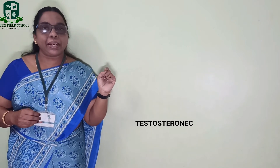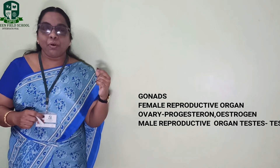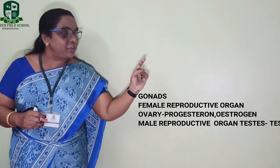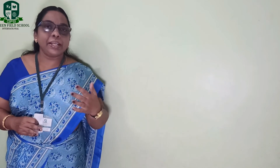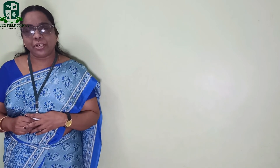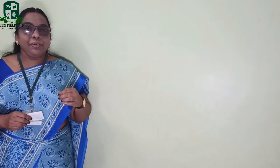Those are the major five glands in the endocrine system. The sixth gland is the gonads. Gonads include the female reproductive organ — ovaries — which produce hormones called estrogen and progesterone. The male reproductive organ is the testis, which produces the hormone called testosterone. We already studied this in detail in the previous lesson about reproduction in animals.